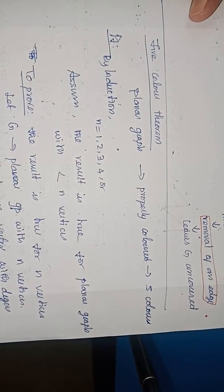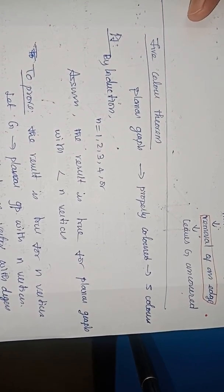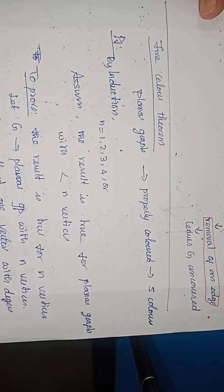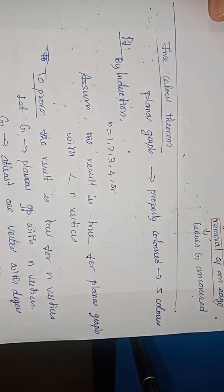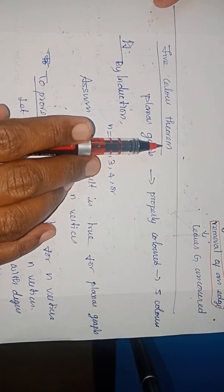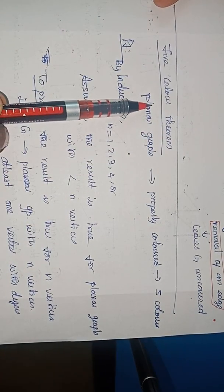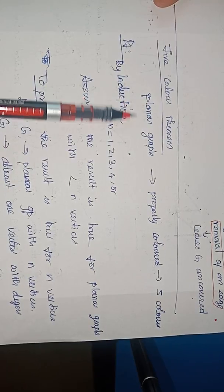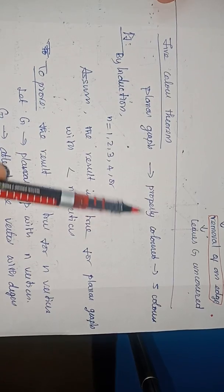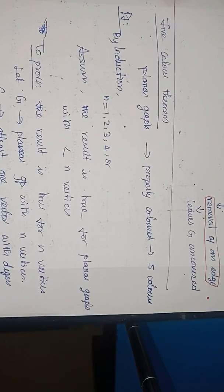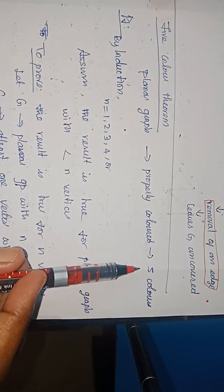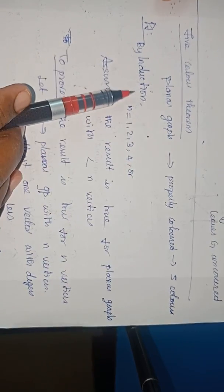There is a four-color conjecture. We know that in an Atlas, all maps have been colored using four colors. There is a theorem called the five-color theorem. This theorem discusses planar graphs: every planar graph can be properly colored with five colors. Let us prove this by induction.